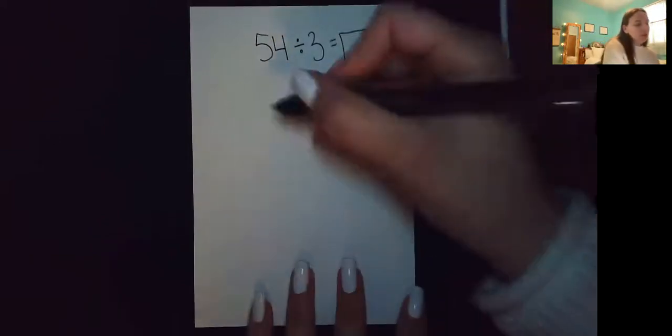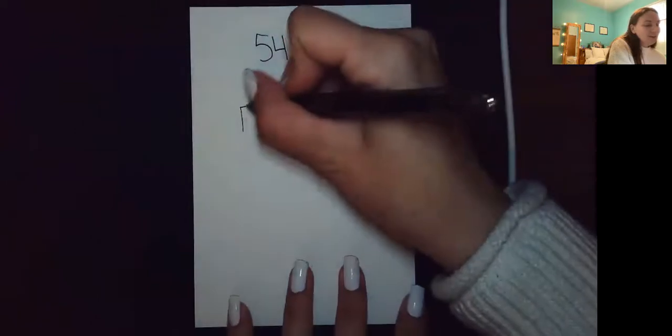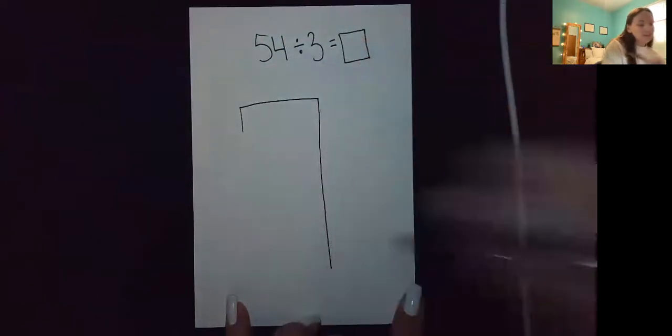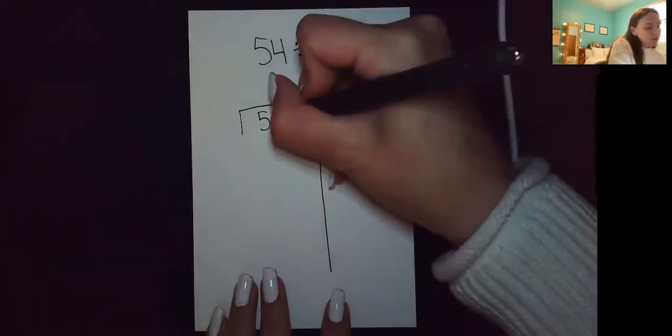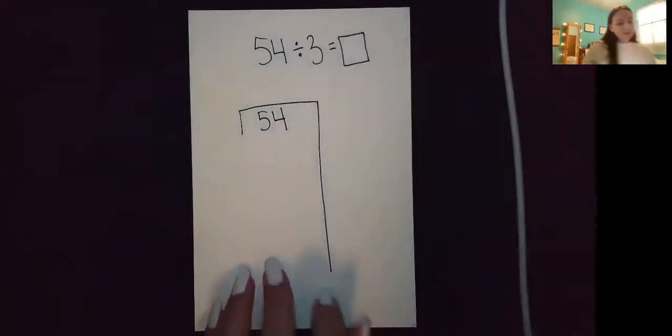So to set up our big seven, we are going to start off by drawing a big seven, literally. Inside the seven will be 54. That is our dividend.